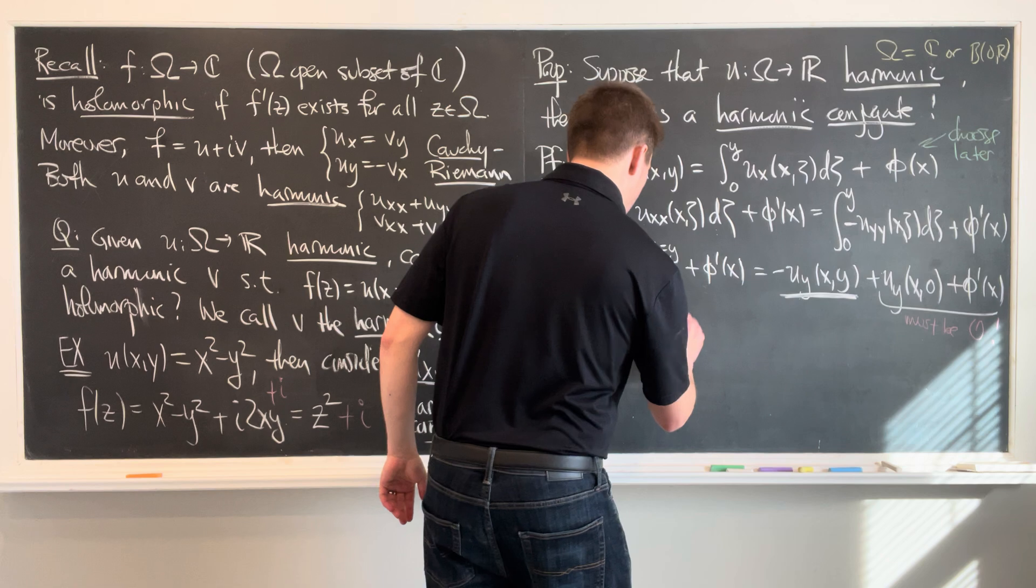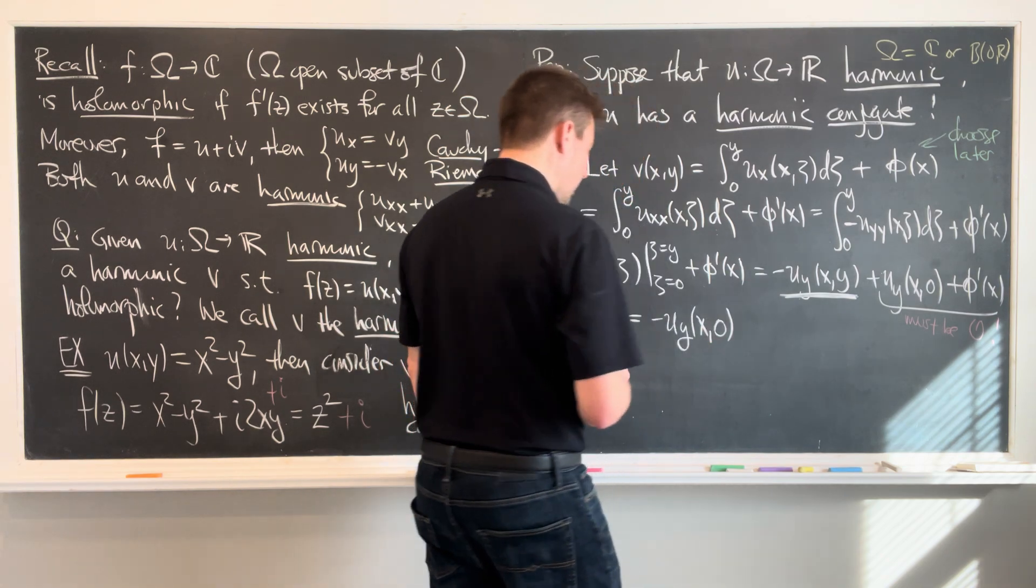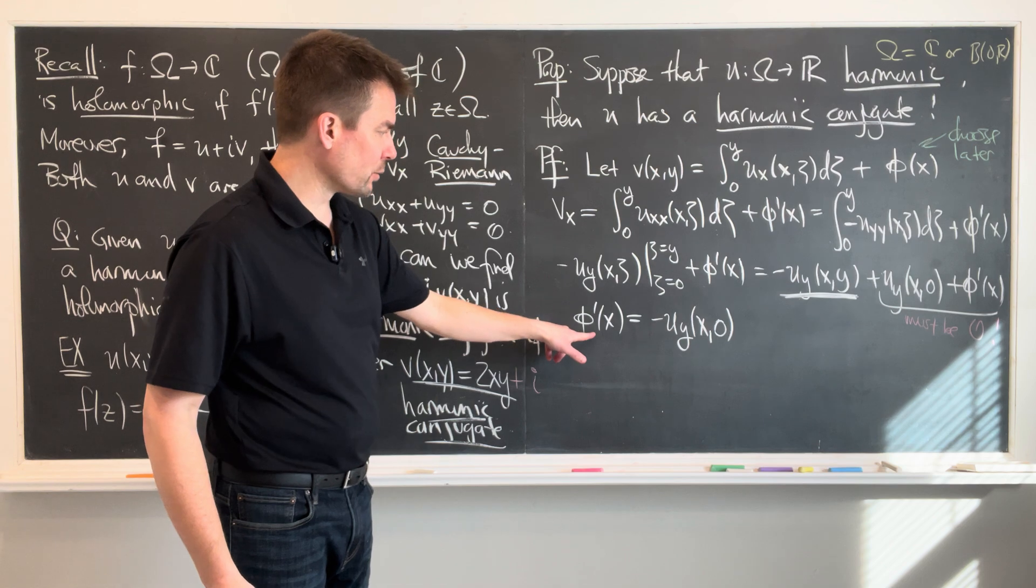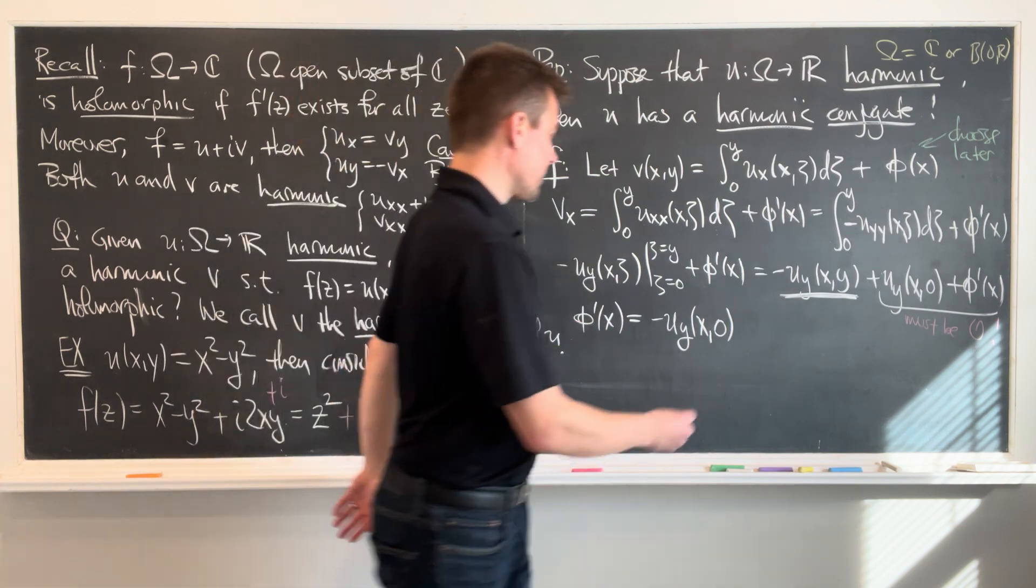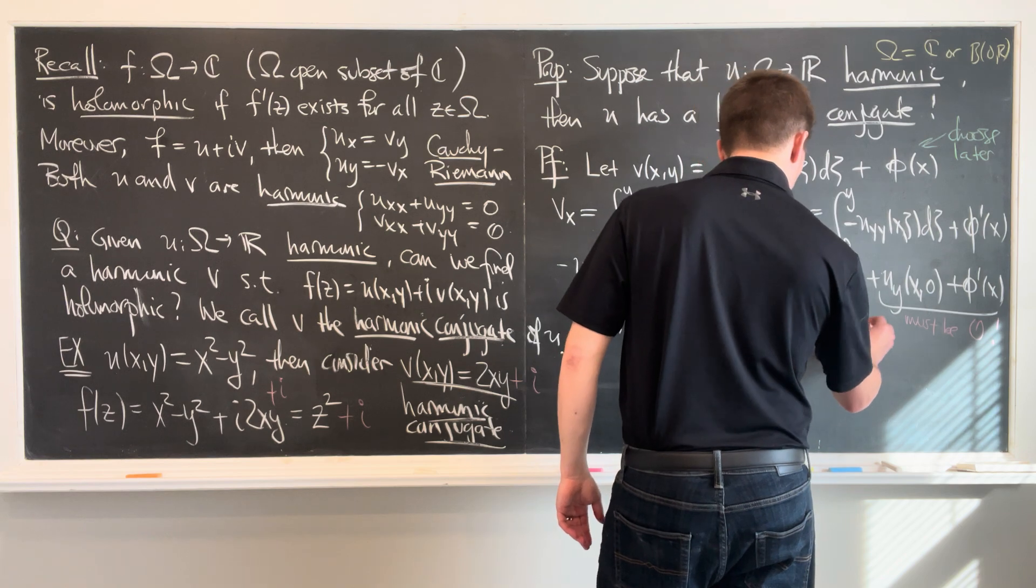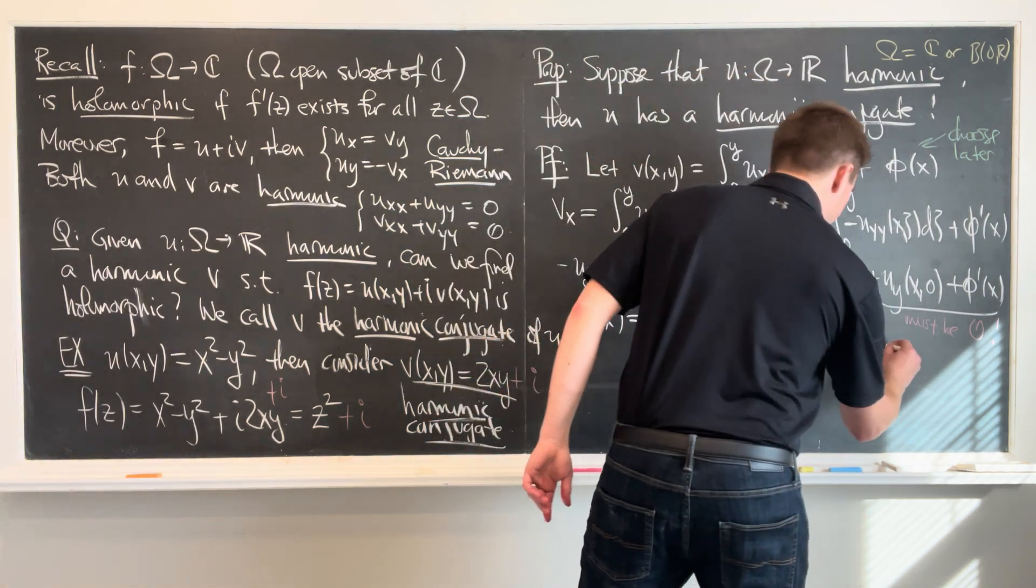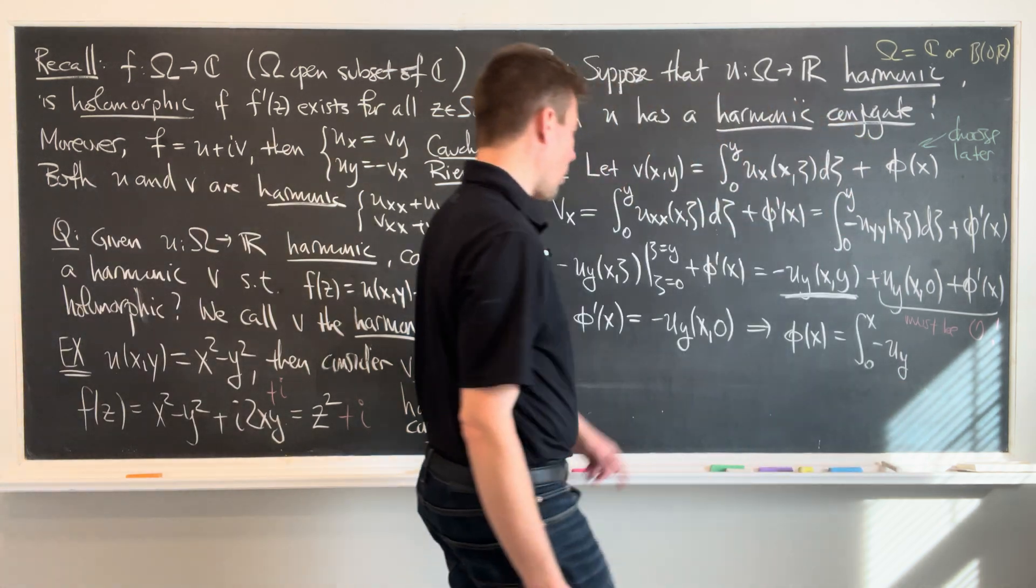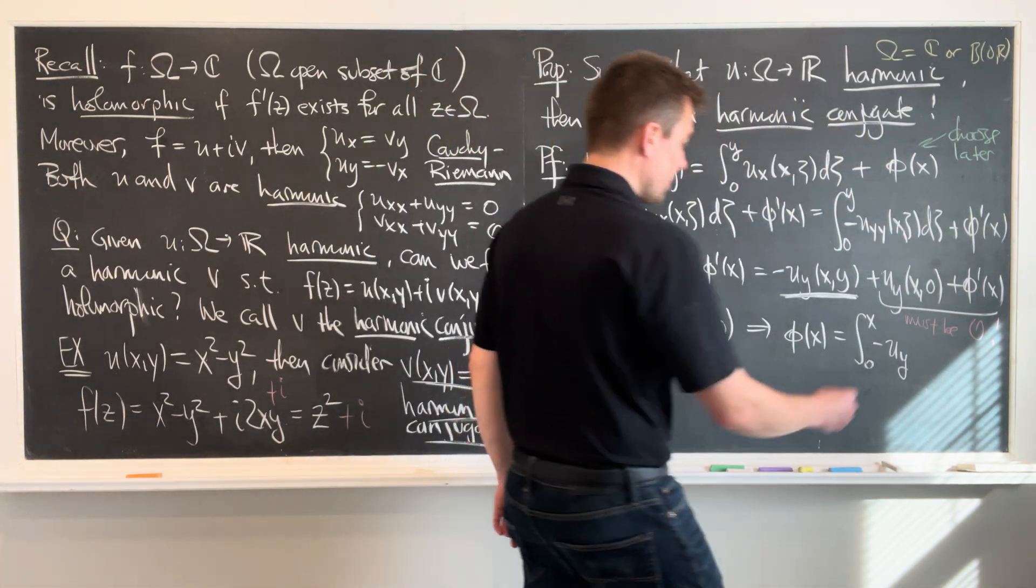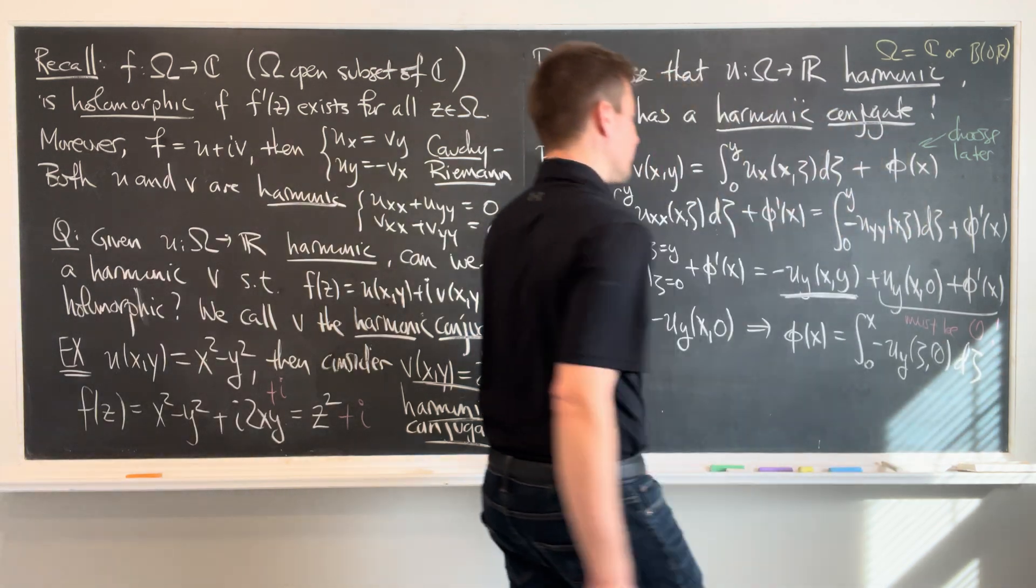Has to be negative uy of x and zero. So then to find phi, I will just integrate this with respect to x, up to a constant of course. So phi of x is the integral from zero up to x of negative uy. Now that's my independent variable now, so I'm going to choose a zeta zero d zeta. Excellent. I found it.